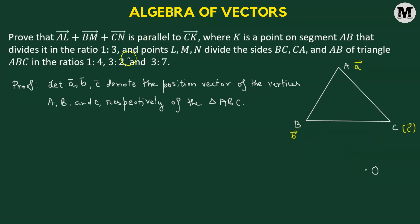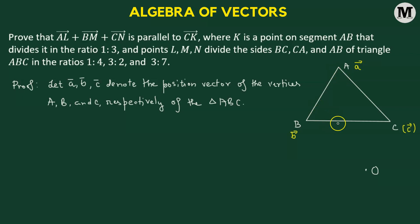It's given here that L, M, N are three points along the sides BC, CA, and AB of the triangle. We'll start with the first point. L is going to divide the side BC in the ratio 1 to 4.